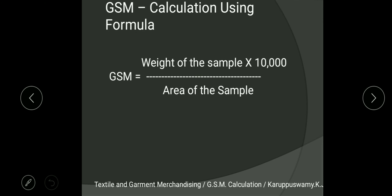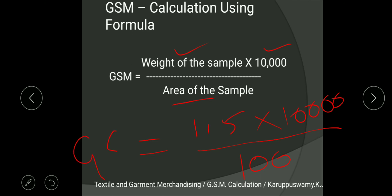The third method is the simplest — you use a formula: GSM = (weight of the sample × 10,000) ÷ area of the sample. For example, if the sample weight is 1.5 grams, multiply by 10,000 and divide by the area of the sample. Simplifying this gives you 150 as the GSM.